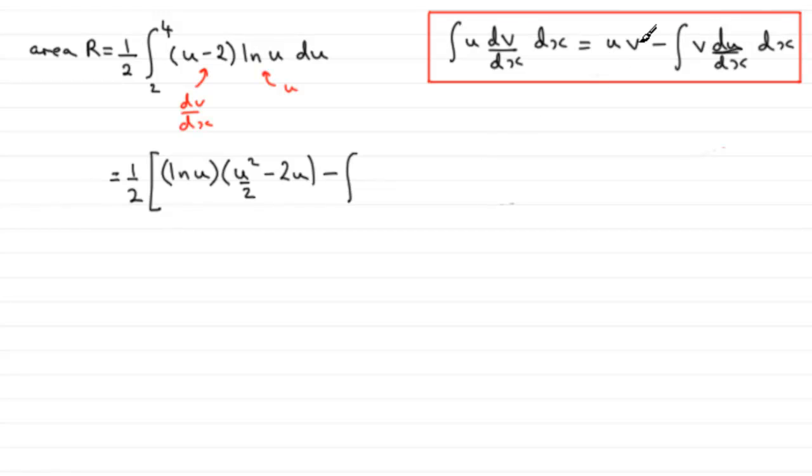And then we've got minus the integral of the part that we've just integrated, this part here which was this bit here, this bracket. So just copy that down again: U squared over 2 minus 2U. And then we multiply it by the differential of the part we called U.